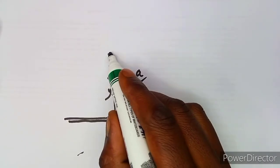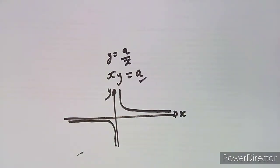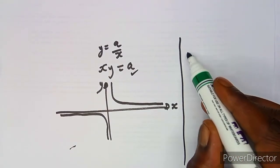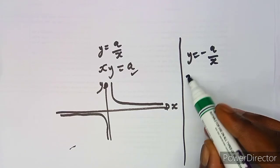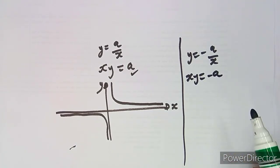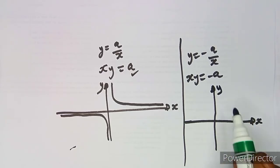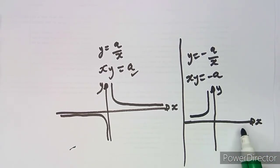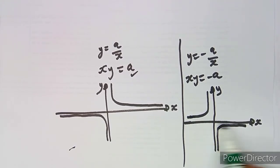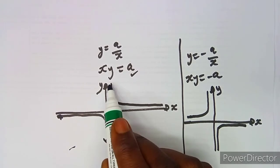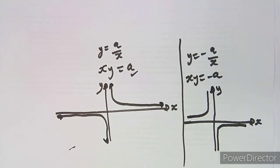This equation can also be written as y = a/x. When a is positive, the graph is in the first and third quadrants. When a is negative — written as y = -a/x, or equivalently xy = -a — the graph is in the second and fourth quadrants, never crossing the x-axis or y-axis.